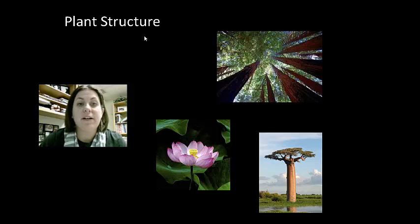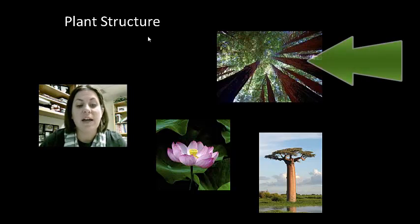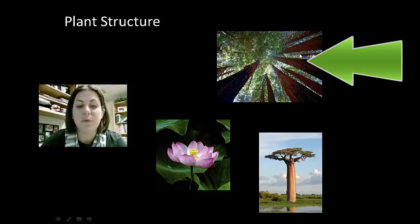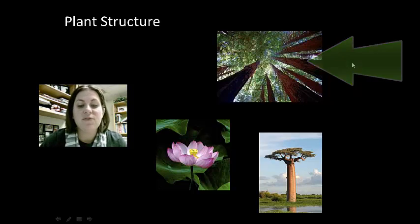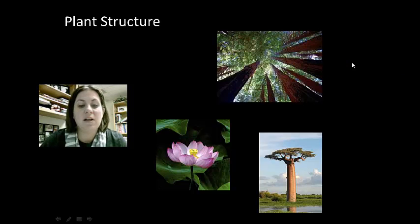Angiosperms are a very diverse group. They range from the cacti in the desert to water lilies to the giant sequoia trees that we see in this picture. No matter what type of angiosperm we're looking at, they have two basic systems present.